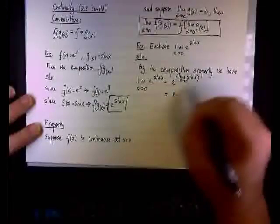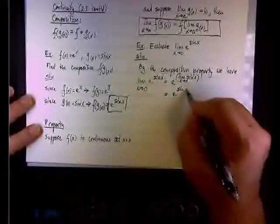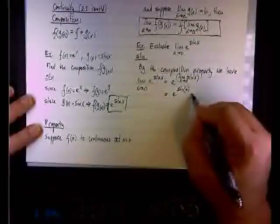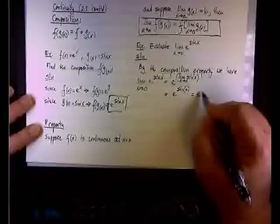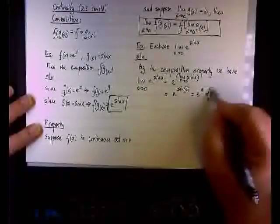It will be simply e to the sin of 0. And of course sin of 0 is 0, so it will be e^0, and e^0 is 1. So here's the result.